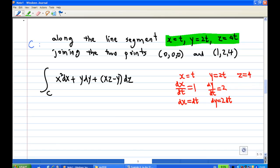Now, z equal to 4t. So dz dt equal to 4. So dz equal to 4 dt. Now, convert everything to t.